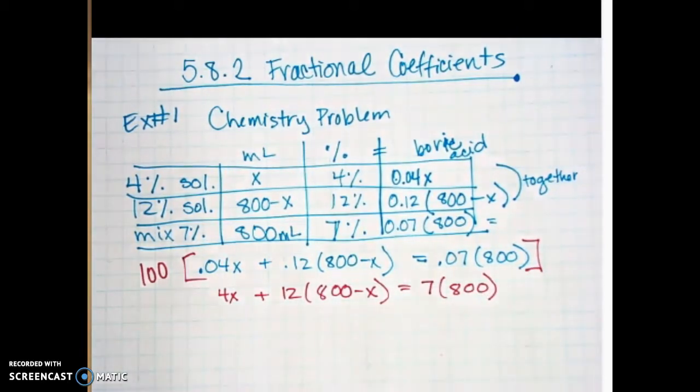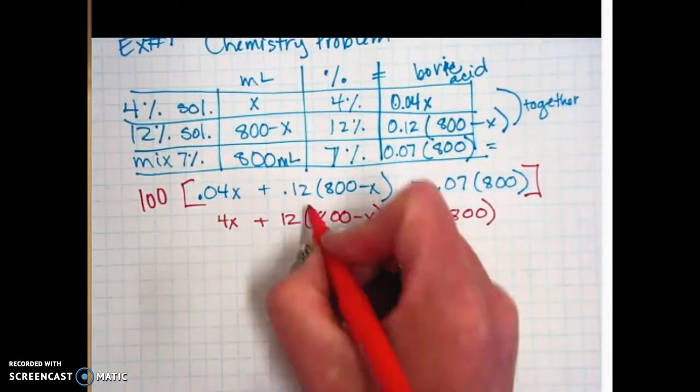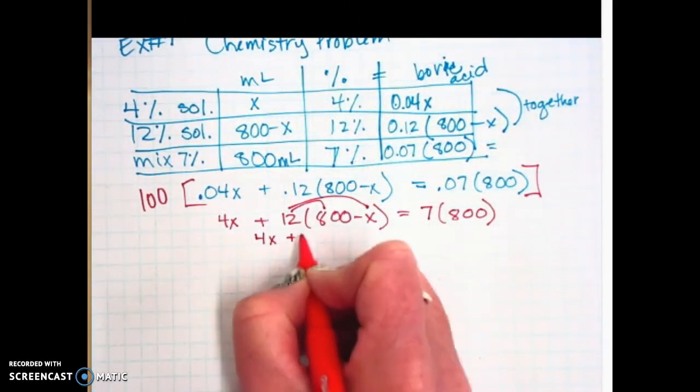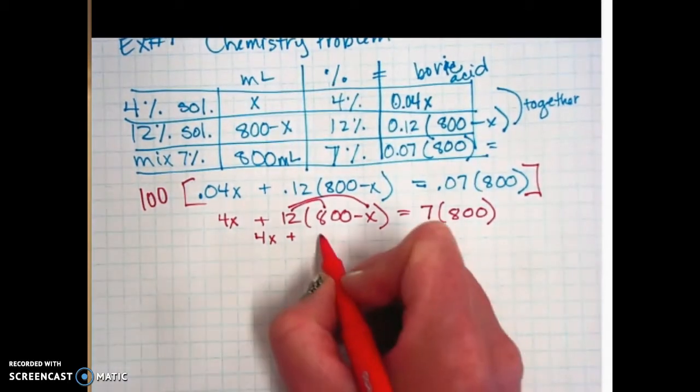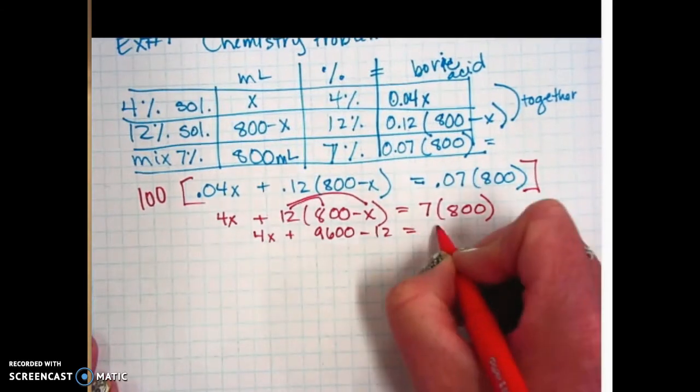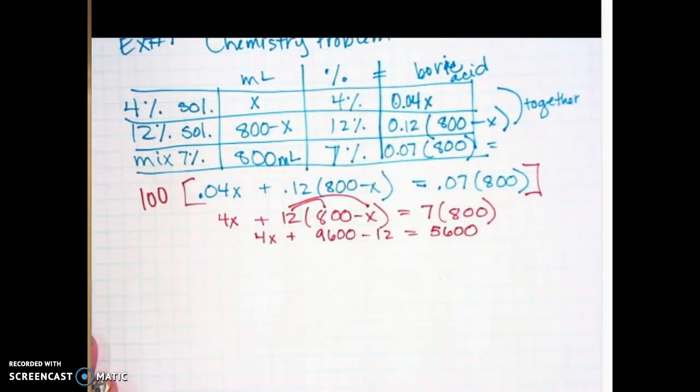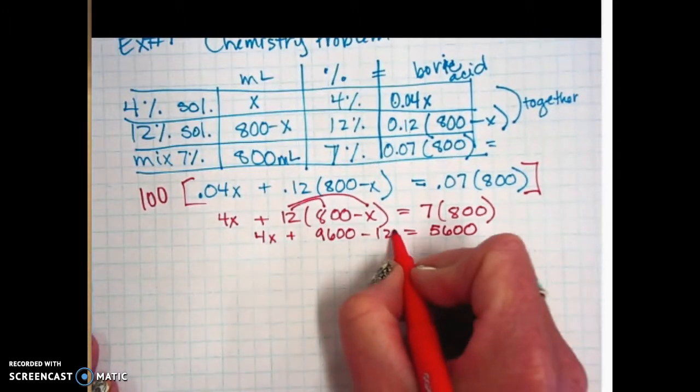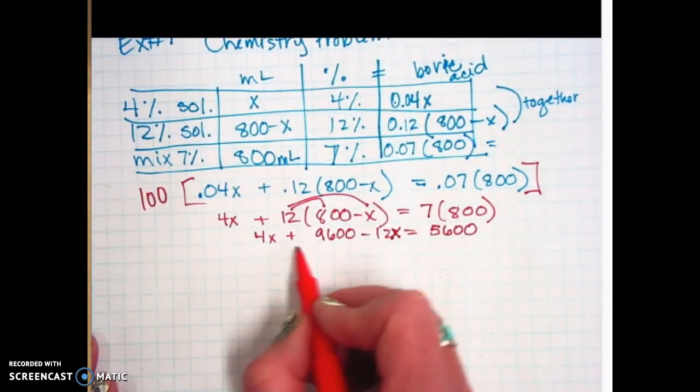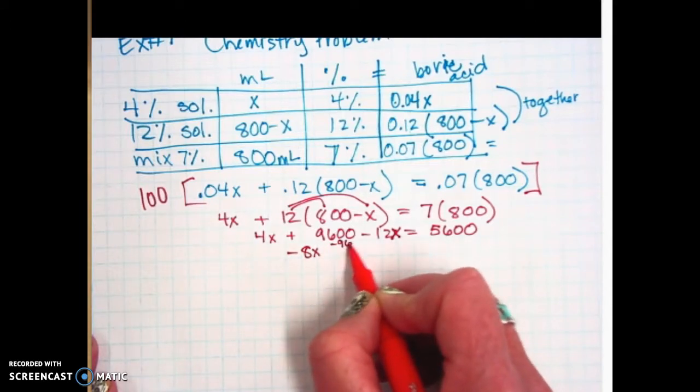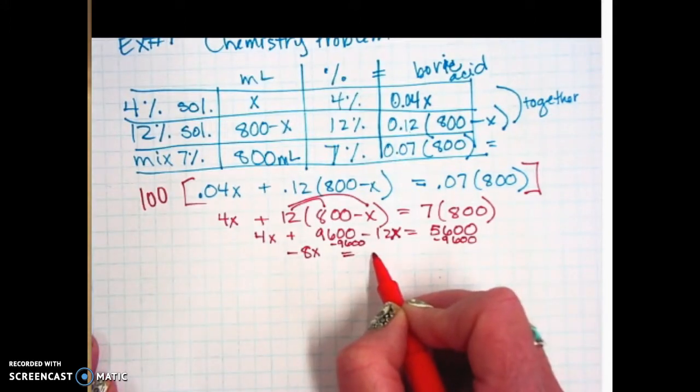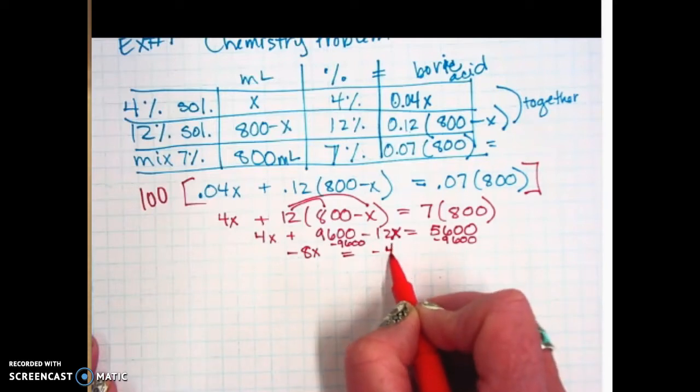From here, you probably just need a calculator. You need to distribute and then solve for x. So we've got 4x and then 12 times 800, what's that? 9,600 minus 12x. And then 7 times 800 is 5,600. And so now we want to do 4x minus 12x. Combine it on the left side. So negative 8x. I'm also going to subtract this 9,600 from both sides, which is good because then I'll have negatives on both sides. So 5,600 minus 9,600 is negative 4,000.